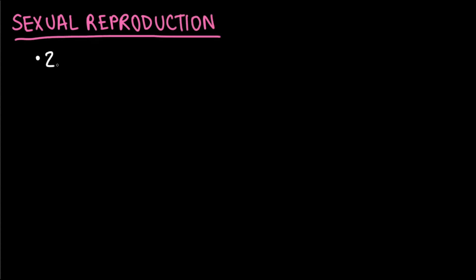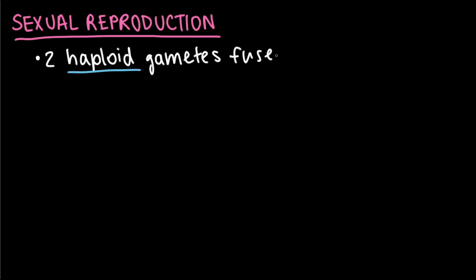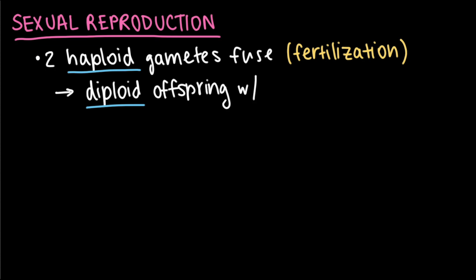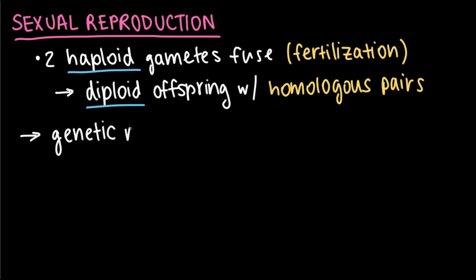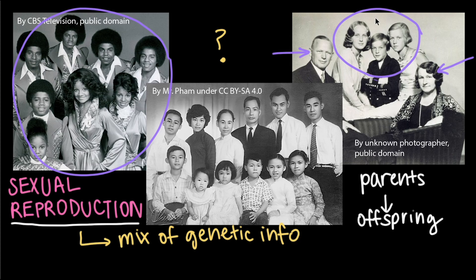To summarize, we learned that sexual reproduction occurs when two haploid gametes fuse together in fertilization, creating a diploid offspring with homologous chromosome pairs. We also learned that the patterns of chromosome inheritance during sexual reproduction lead to genetic variation in families and populations — it's why children look different from their biological parents, brothers, or sisters. We've all inherited different sets of chromosomes because of sexual reproduction, which in turn makes each and every one of us one of a kind.